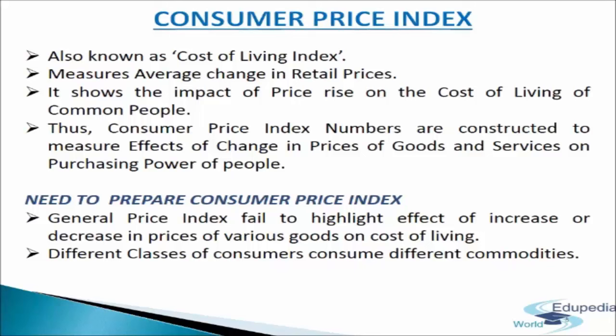Since the number of commodities is large, it is necessary to identify a particular group of consumers and select those commodities which are generally consumed by them. The major groups of consumers for whom the consumer price index numbers have been constructed in India are the industrial workers, the urban non-manual workers, and the agriculture labourers.